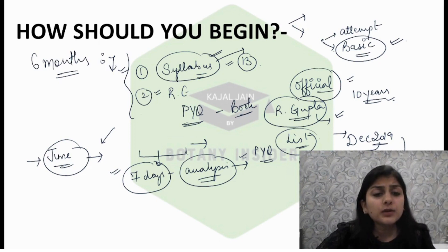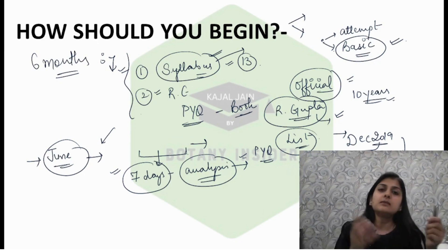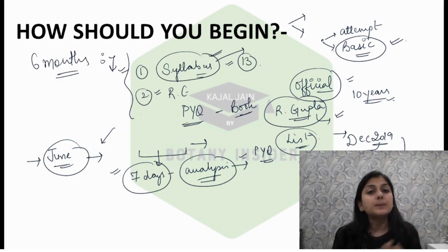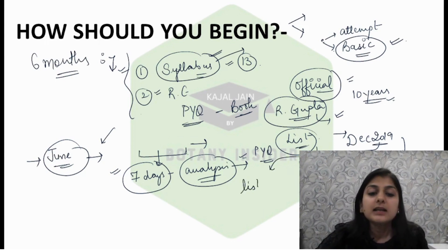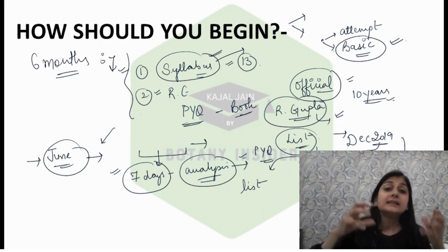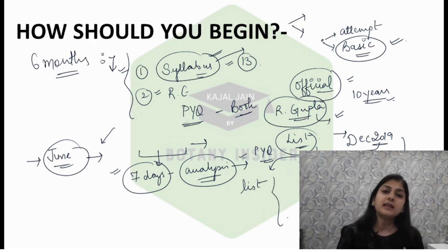From unit 1 up till unit 13, you should have all the most important topics jotted down. As you analyze papers and proceed further, you will see topics getting repeated in subsequent years. At the end of your analysis, make a list for yourself that out of unit 1, these are the most commonly repeated topics. Make a list for unit 2, 3, and so forth. First thing should be analysis of question papers to understand the complete importance of all topics.